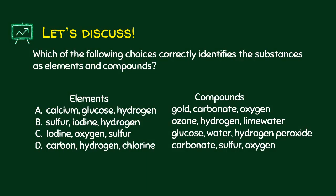Which of the following correctly identifies substances as elements and compounds? Remember that elements are found in the periodic table. Letter A is not true because glucose is not an element — eliminate A. Letter B has sulfur, iodine, and hydrogen as elements, but hydrogen is not a compound — eliminate B. Letter C has iodine, oxygen, and sulfur as elements, and glucose, water, and hydrogen peroxide as compounds — they are all correct. The answer is letter C.